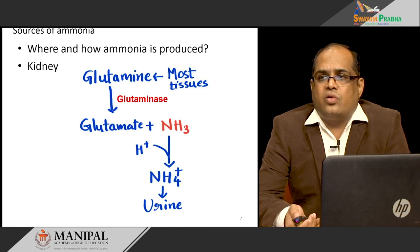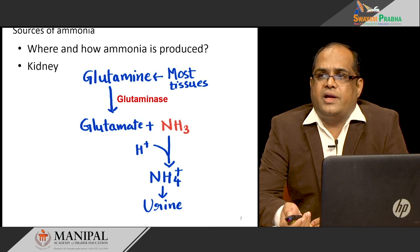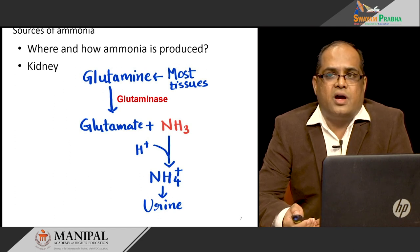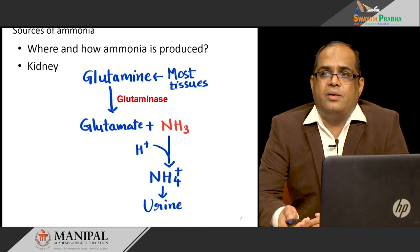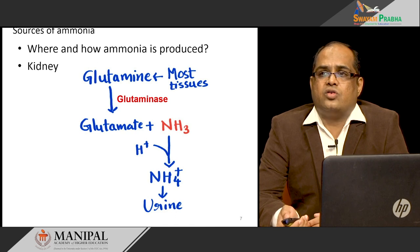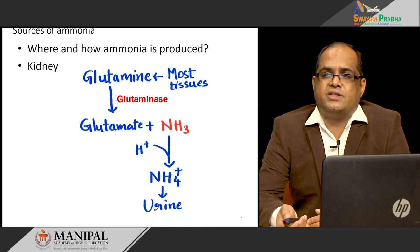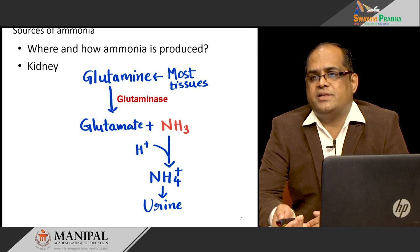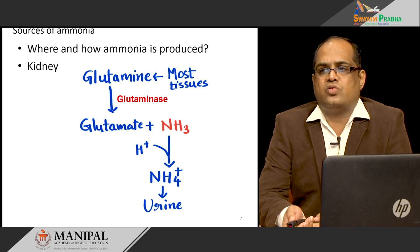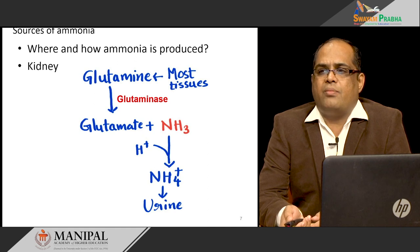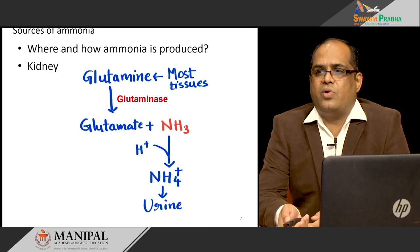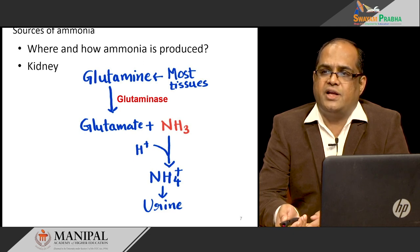In the kidney, glutamine arriving from peripheral tissues is acted upon by glutaminase, which removes ammonia and forms glutamate and free ammonia. This ammonia combines with a proton to form ammonium ion, which is excreted in the urine. This plays an important role in acid-base balancing by helping excrete protons.